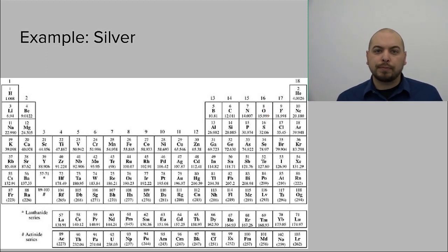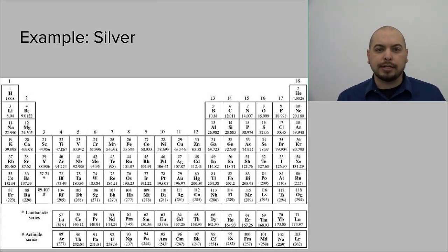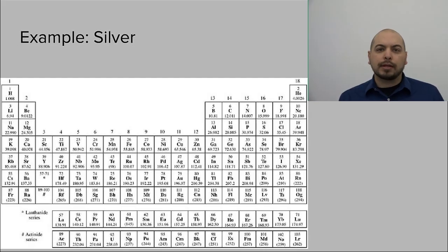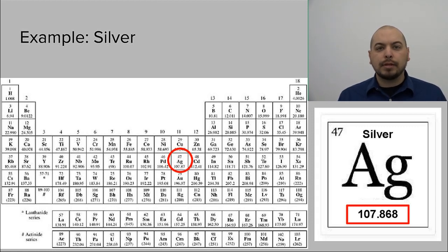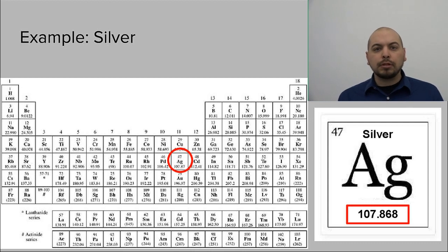I want you guys to take a second and find silver on the periodic table, then tell me what its atomic mass is. Pause the video if you need to. Now silver is a tricky one, because the atomic symbol isn't exactly what you'd expect — the atomic symbol of silver is Ag. Its atomic number is 47, and its atomic mass is 107.868 amu. This means that in a large sample of silver atoms, on average they'd weigh about 107.868 atomic mass units.